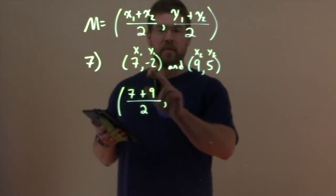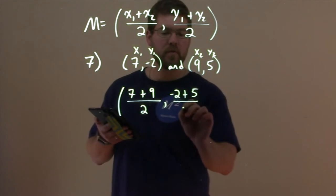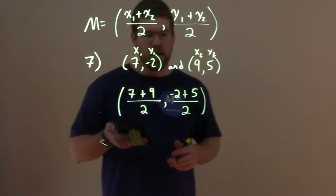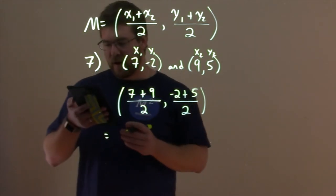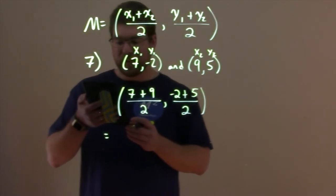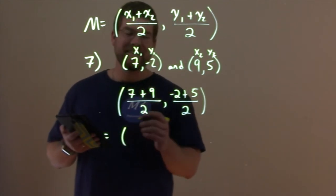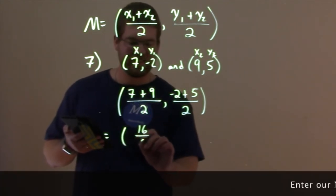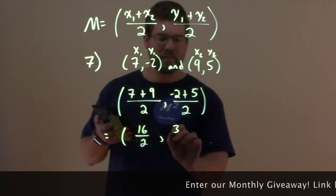Our y values, same thing. y1 is negative 2, plus y2, which is 5, over 2. So from there, let's simplify. 7 plus 9 is 16, over 2. And then negative 2 plus 5 is 3, over 2.